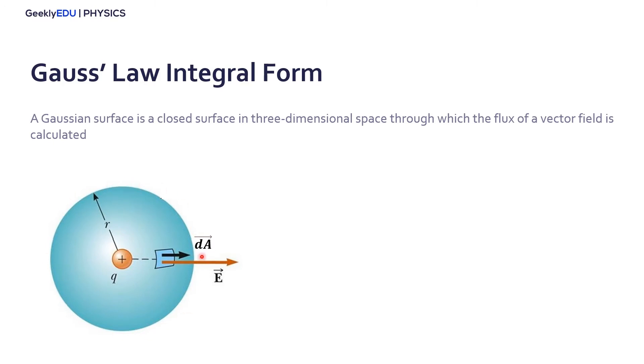Right in the middle of this sphere, we have a positive charge. And because of this charge here, we have an electric field that's represented by this vector here, E. And we also have, let's take a really small part of the surface area, dA. And try to calculate the electric flux.